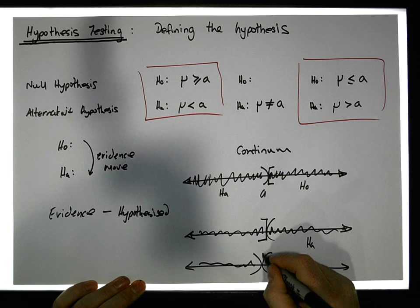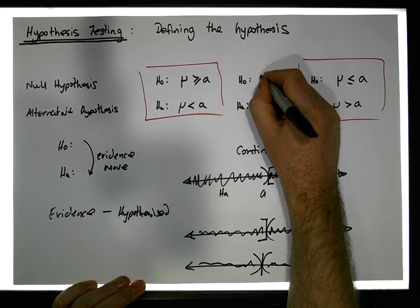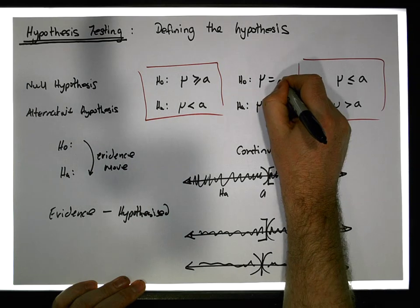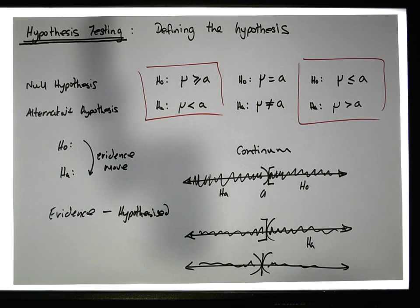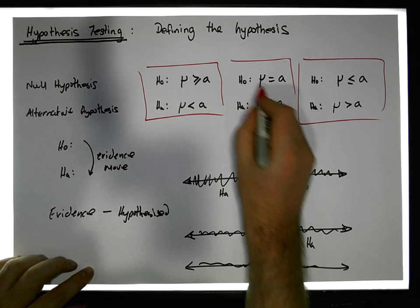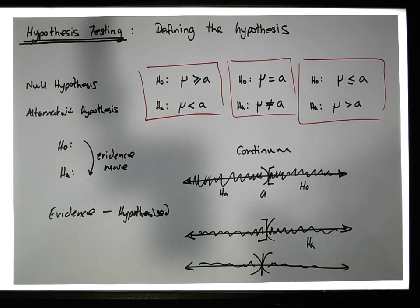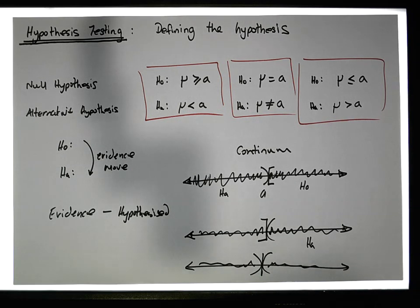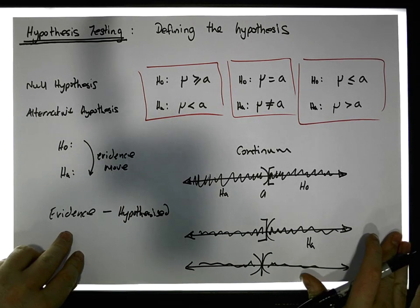The third situation is that the population parameter is different — it could be over here or over here — which leaves the possibility that the population parameter is equal to a, which we assume to be true. So here are our three positions.